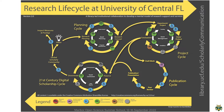This has been created by the University Library of Central Florida. They created this research lifecycle illustration to find out which are the places where a library comes into play in the field of research support. The library is marked with a blue icon. On this cycle basis, they define four different cycle parts: the planning cycle, the project cycle, the publication cycle, and the 21st century digital scholarship cycle. There are so many items where a library comes into force.